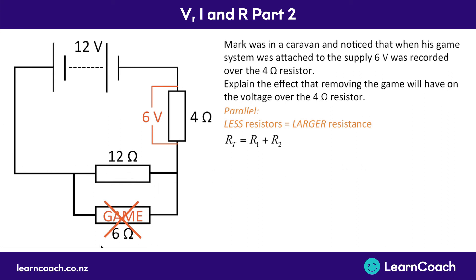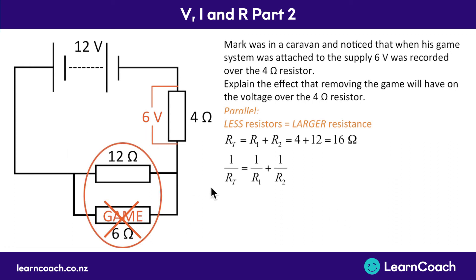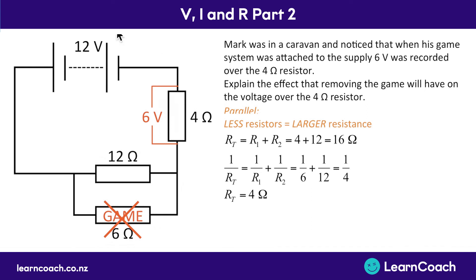Once the game is removed, we only have a series circuit. R_total = 4 + 12 = 16 ohms. When the game was included, the parallel section had 1/R_total = 1/6 + 1/12, giving a parallel resistance of 4 ohms. Adding the series 4 ohm resistor gave a total circuit resistance of 8 ohms. So removing the game doubled the total resistance from 8 ohms to 16 ohms.